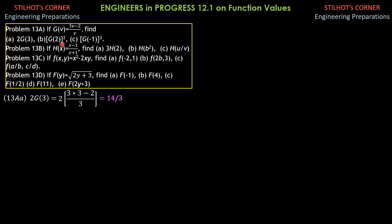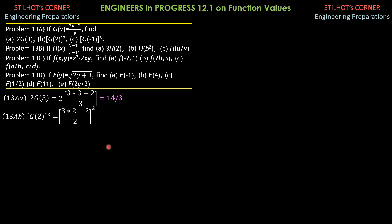For part b, [g(2)]². So g(2) squared is (3 times 2 minus 2) all over 2, quantity squared. That is (6 minus 2) over 2, which is 4 over 2, which is 2. Then 2 squared is 4. So the answer is 4.